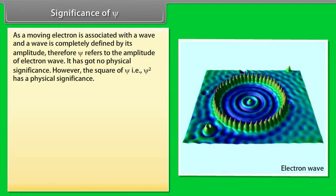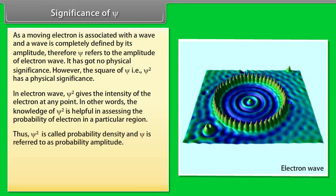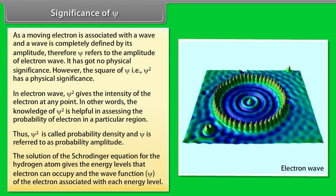The significance of ψ: a moving electron is associated with a wave, and a wave is completely defined by its amplitude. Therefore, ψ refers to the amplitude of the electron wave and has no physical significance by itself. However, ψ² has physical significance. In the electron wave, ψ² gives the intensity of the electron at any point — in other words, ψ² is helpful in assessing the probability of finding an electron in a particular region. Thus, ψ² is called probability density and ψ is referred to as probability amplitude. The solution of the Schrödinger equation for the hydrogen atom gives the energy levels an electron can occupy and the wave function associated with each energy level.